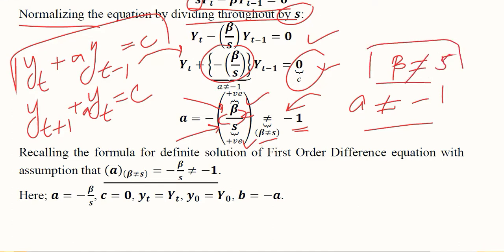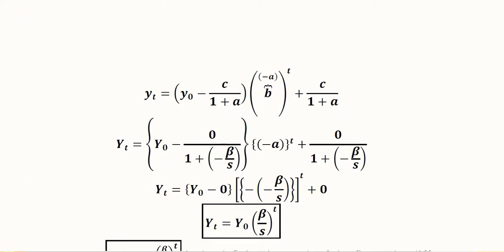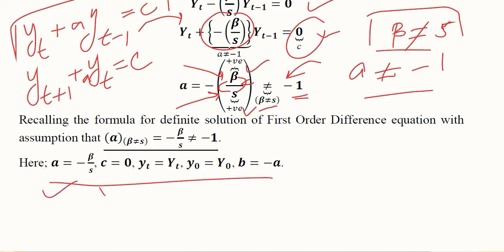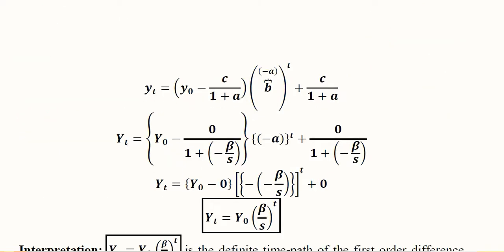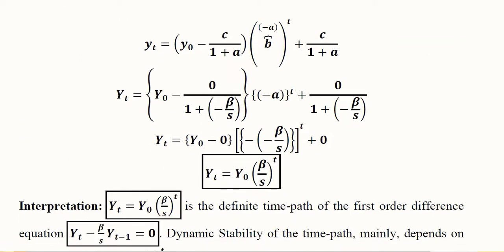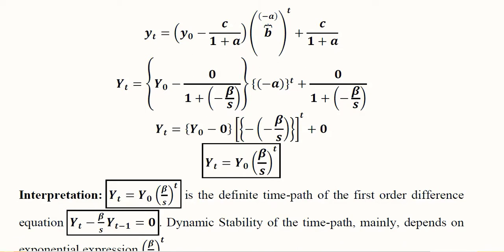In order to use this formula, we have to extract all these values: a, c, y_t initial condition, and the value of b. Now we can easily substitute all these values. Here the value of c, the value of a, these values are now being substituted.